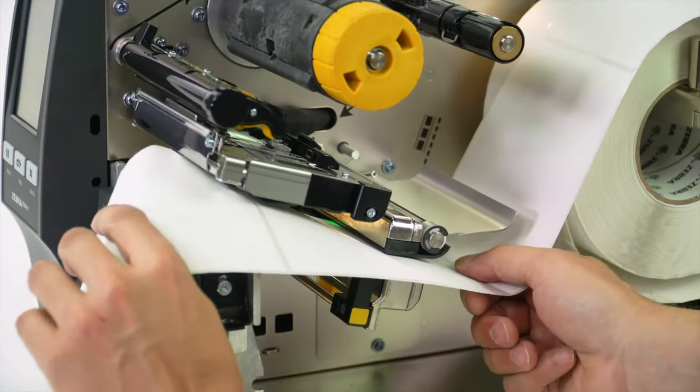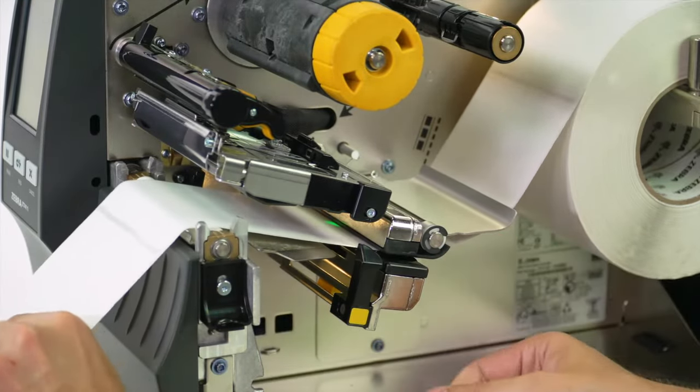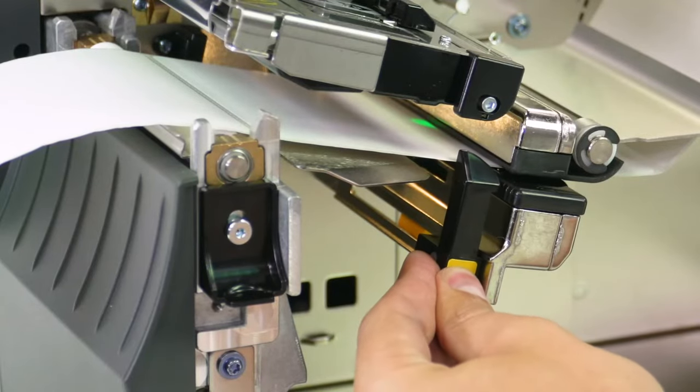Feed the media under the dancer assembly, through the media sensor, and under the printhead. Slide the media guide in.